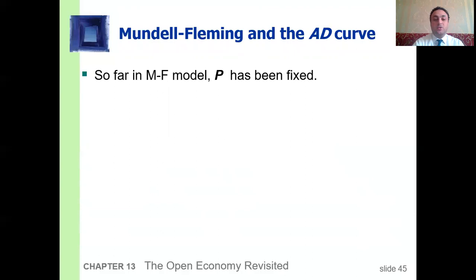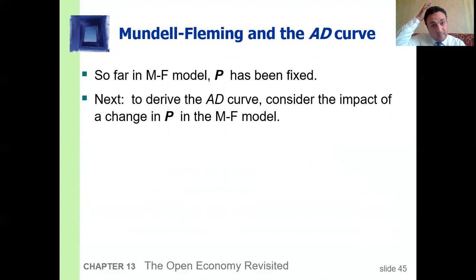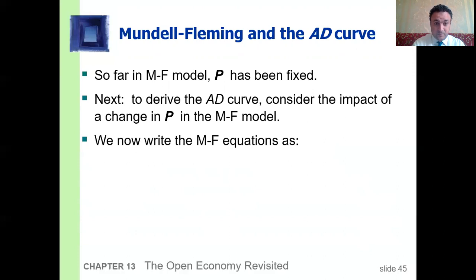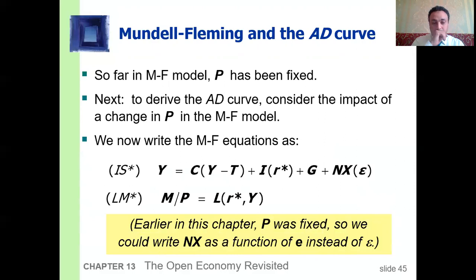The Mundell-Fleming model and the aggregate demand curve. So far in the Mundell-Fleming model the price level has been fixed. To derive the aggregate demand curve, consider the impact of a change in the price level in the Mundell-Fleming model. We now write the Mundell-Fleming equations using the real exchange rate. Earlier in this chapter the price was fixed, so we could write net exports NX as a function of the nominal exchange rate instead of the real exchange rate.